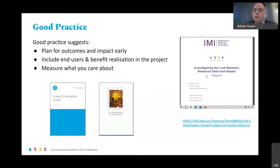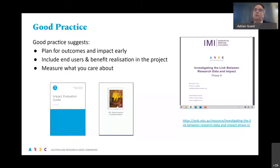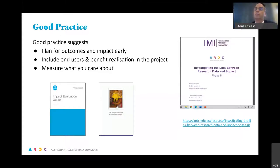That project on the right was investigating the link between research data and impact, looking at the impact narratives reported by all Australian universities in the ARC evaluation program and the UK ones as well. It identified really important pathways that data and data infrastructure provide on the pathway to impact. All of the good practices suggested in those studies are now reflected in our program, summed up as: it's important to plan for outcomes and impact early; include end users and benefit realization in the project itself; and if you care about these things, you have to have a way of measuring them.